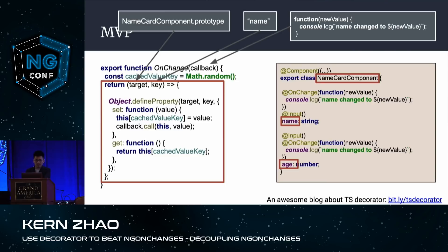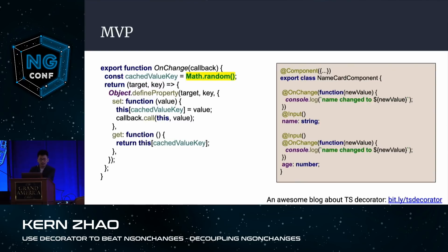This works, absolutely. Just a side note about Math.random: I would recommend using Symbol instead. Symbol was introduced in ES6. Its biggest features are that a symbol is absolutely unique — no two symbols are equal — and a symbol can be used as an object key. So we create two symbols, one for name and one for age.